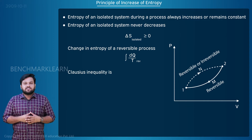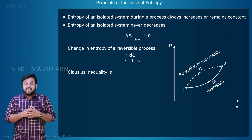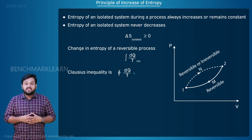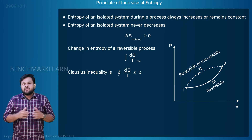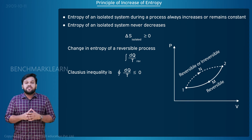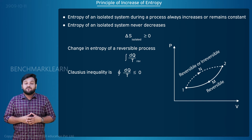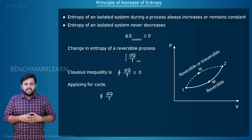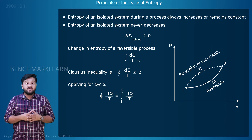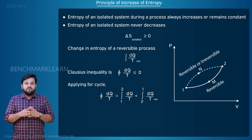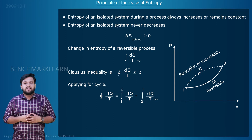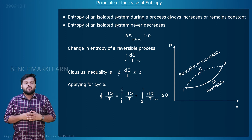By Clausius inequality, the cyclic integral of dq by T is less than or equal to zero. Calculating the cyclic integral of dq by T for the cycle: the cyclic integral of dq by T equals the integral from 1 to 2 of dq by T, plus the integral from 2 to 1 of dq by T for the reversible process, and this is less than or equal to zero.